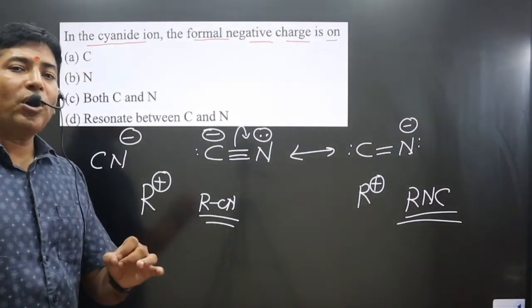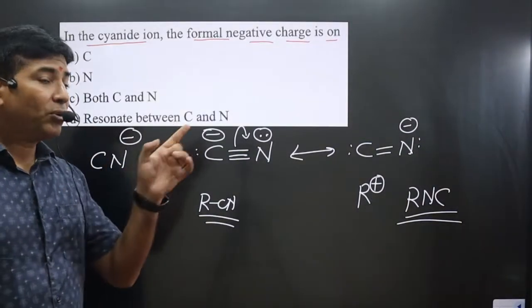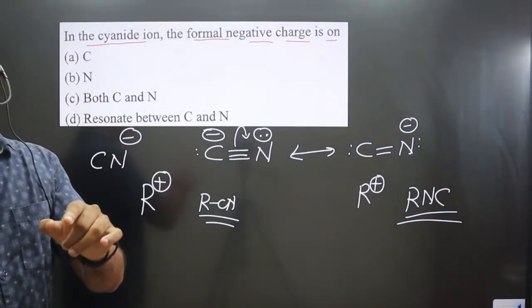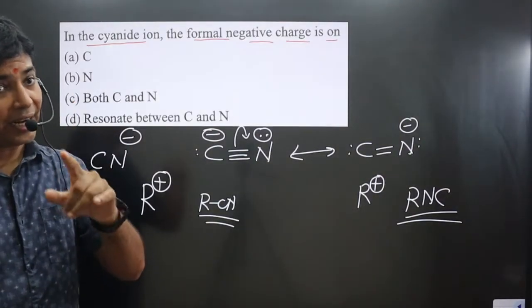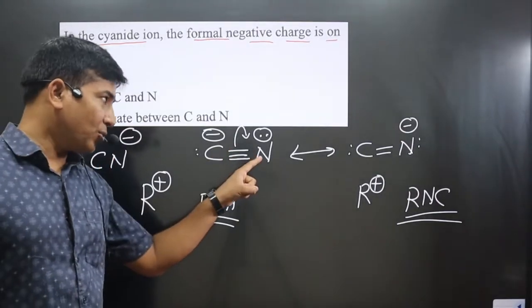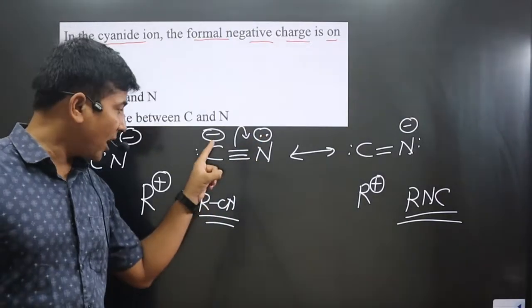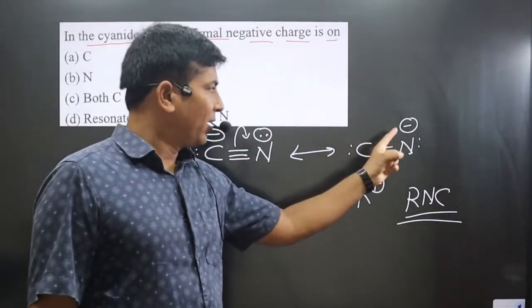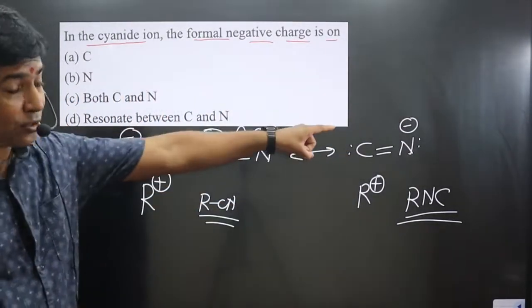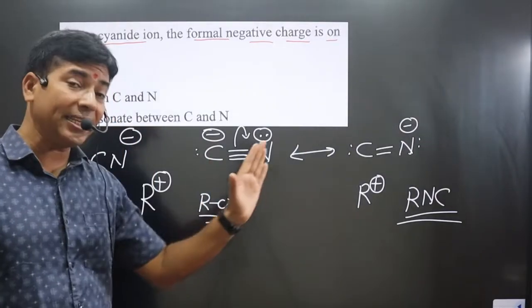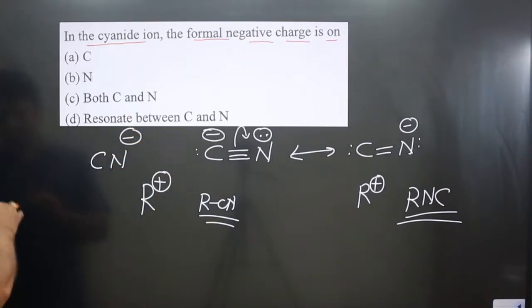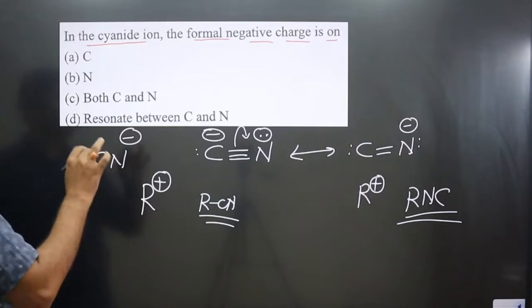Class 12 students who have studied coordination chemistry may have learned about ambident ligands. Ambident ligands have more than one donor site but use only one donor site at a time. In this case, nitrogen also has a lone pair, but when carbon is donating electron density, only carbon acts as donor, and vice versa. These are examples of ambident ligands, and the formal charge resonates between carbon and nitrogen.